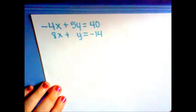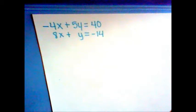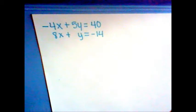The first problem is negative 4x plus 5y equals 40 and 8x plus y equals negative 14.